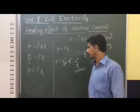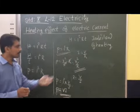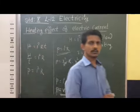Similarly, we can find one more form. Substituting R equal to V divided by I, power becomes I² into V divided by I, which simplifies to P equal to V times I. So the various forms of the power equation are: P equal to I²R, P equal to V²/R, and P equal to VI. These are the various equations used to represent electric power.